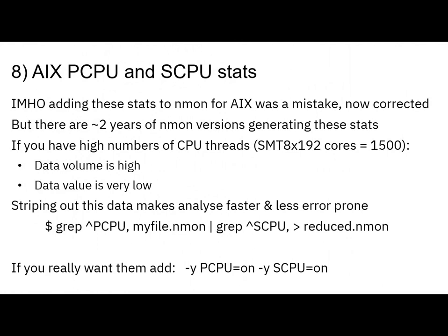Number eight — this is for AIX only, nothing to do with Linux. In my humble opinion, these PCPU and SCPU stats were added to AIX at a particular technology level and it was a mistake that is now corrected. But for two years there are NMod versions in those versions of AIX that generate extra stats for the physical CPUs and the scaled CPUs. These numbers of stats are very, very high — particularly if you're on big machines. If you're on a great big E880 or 980, it could be producing 1,500 extra lines of stats that you probably don't want. It's only if we've got the processor in a mode where it can vary the frequency over time that it actually adds any value.